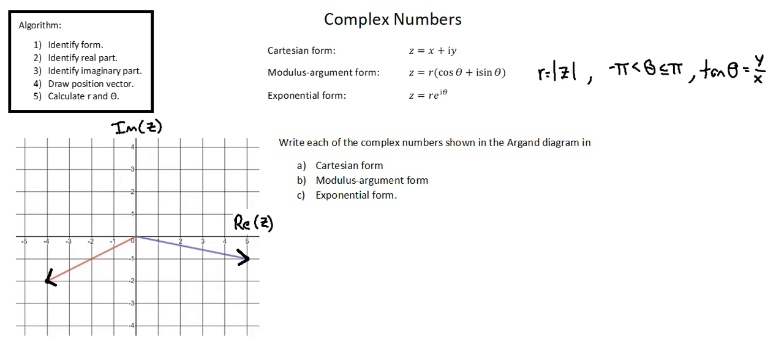An important note is that when the complex number is in quadrant 2 or 3 or 4 of the argand diagram, we'll need an adjustment to the tangent calculation to arrive at the correct angle.